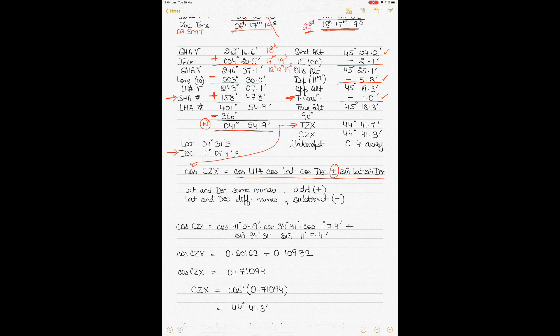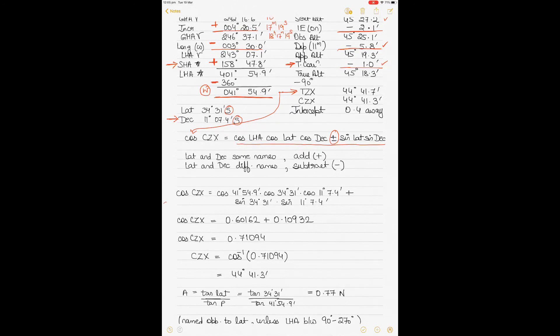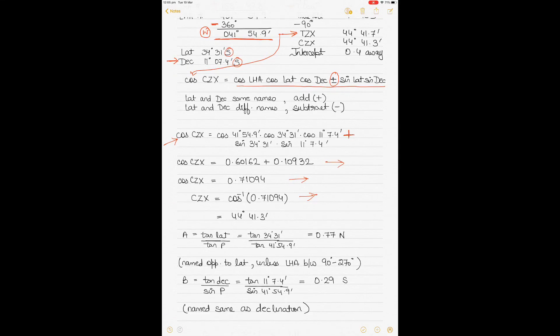If latitude and declination are the same name — both north or both south — use the plus sign. If they are different names, use the minus sign. In this case both latitude and declination are south, so use the plus sign. Put in the values of LHA, latitude, and declination, follow the formula, and take the arc cosine of the final value to get CZX of 44 degrees 41.3 minutes.